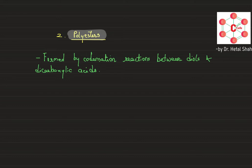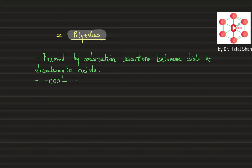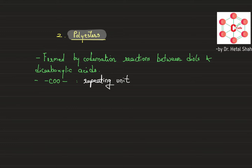Polyesters are formed by condensation reactions between diols. One of the monomers should be a diol and the other monomer should be a dicarboxylic acid. In a polyester, the repeating unit is COO, which is the ester linkage repeating unit.